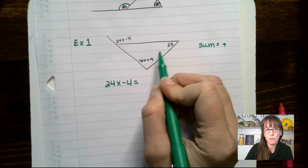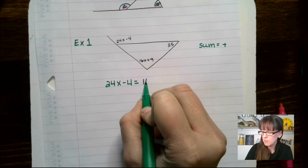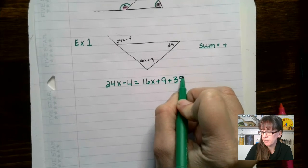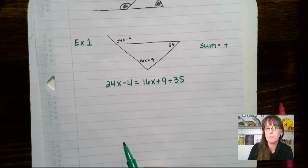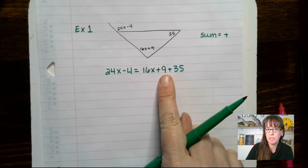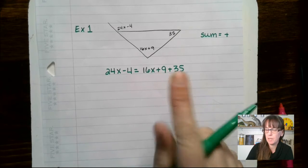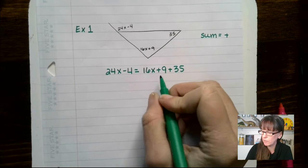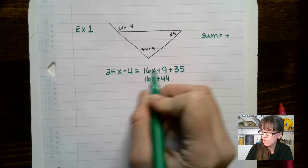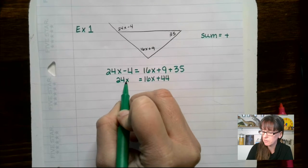So we're going to take these two things, we're going to add those up, and that's going to equal this guy. So I have 16x plus 9 plus 35 equals all that right there. So let's take a look. For our next step in solving this equation, we want to combine some like terms. 35 plus 9 is 44. So we have 16x plus 44. And then on this side, we have 24x minus 4.